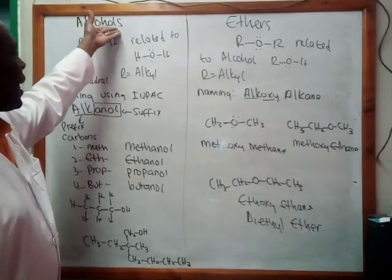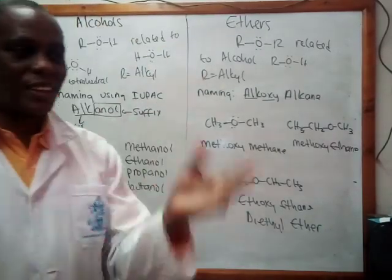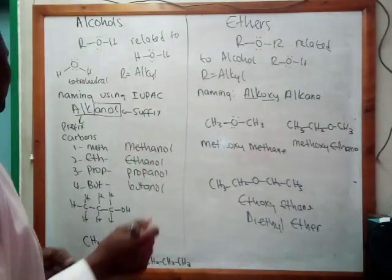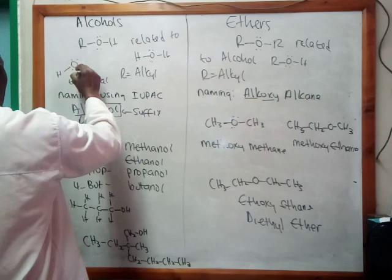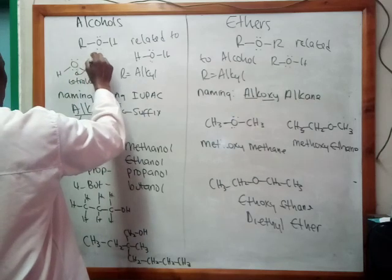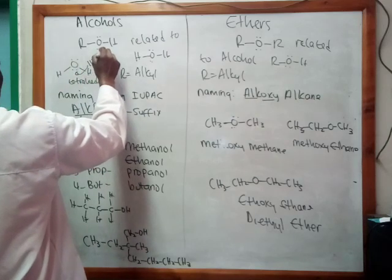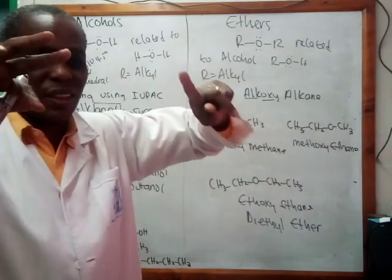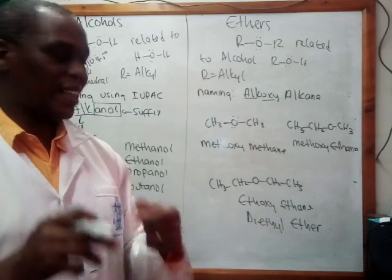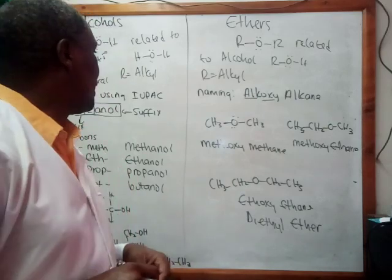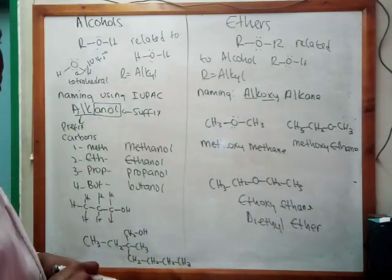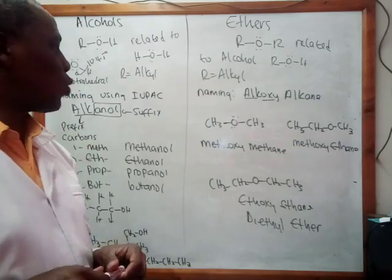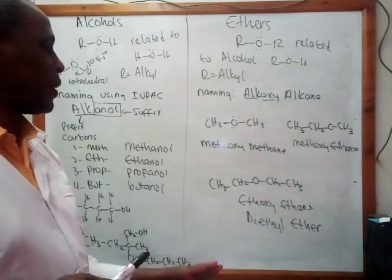So we've seen that alcohols and ethers have a tetrahedral structure around oxygen, with bond angles of 104.5°, because the two lone pairs push those bond angles closer together than in the ideal methane structure. Now let's look at how we name alcohols using IUPAC nomenclature, and we'll come to ethers later.